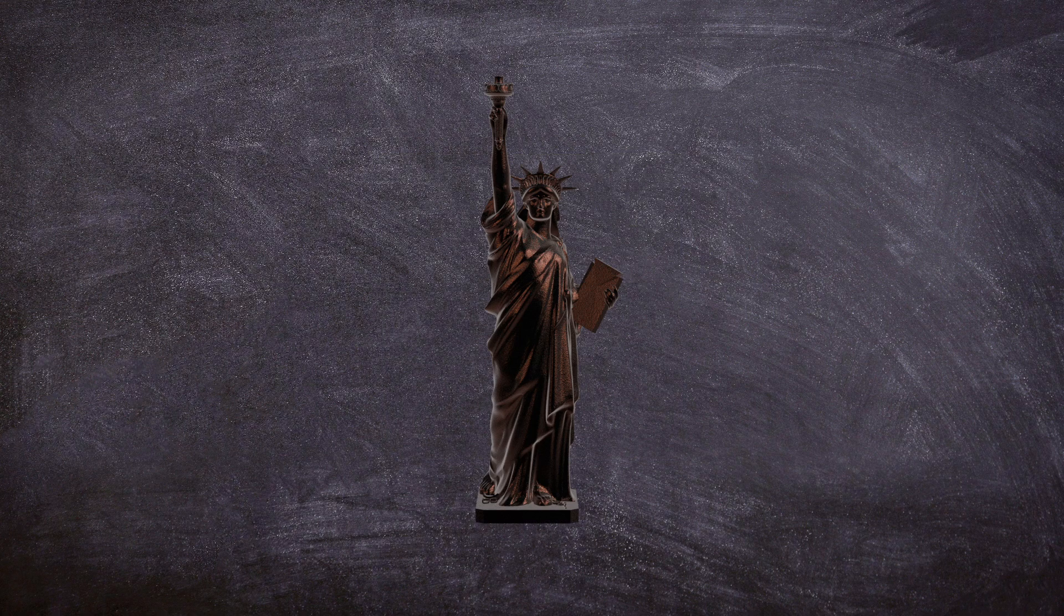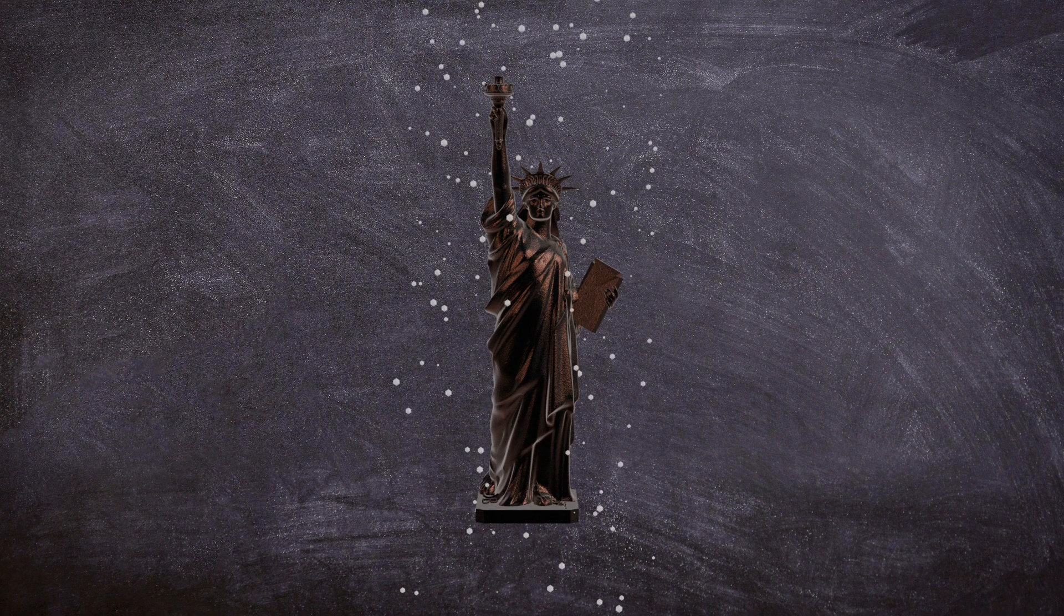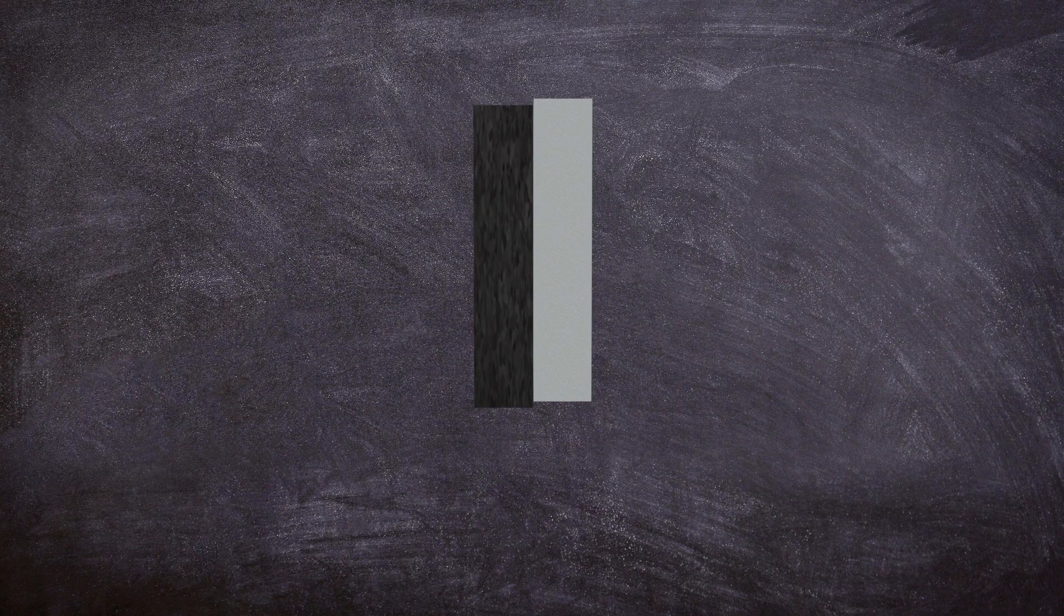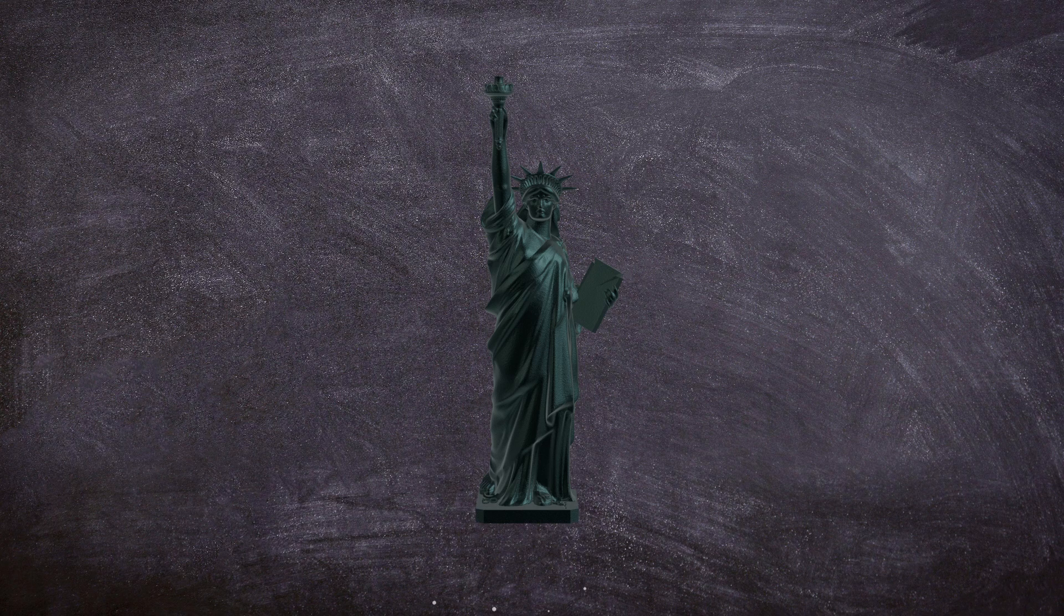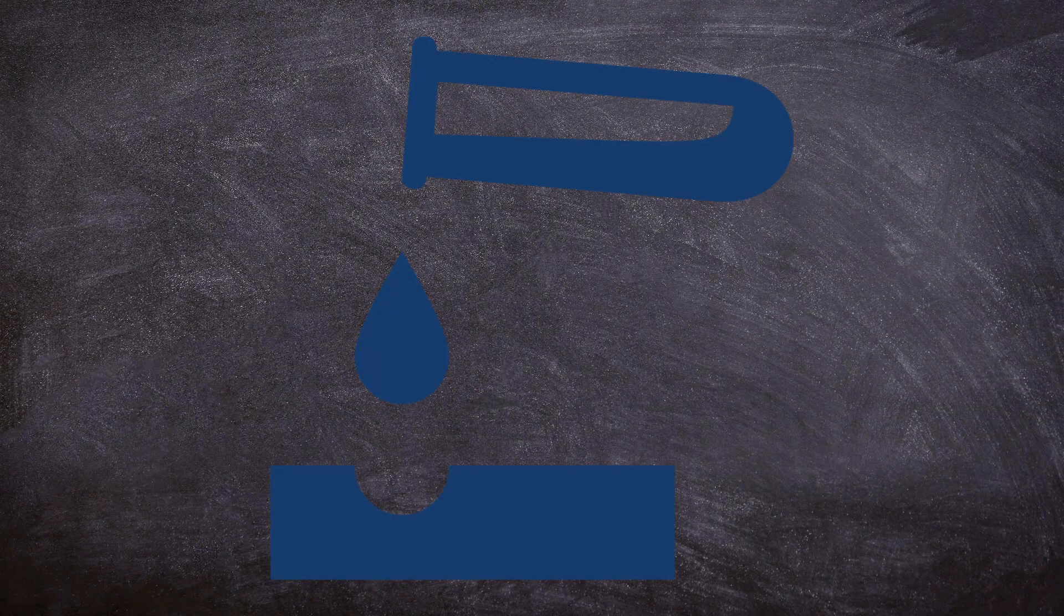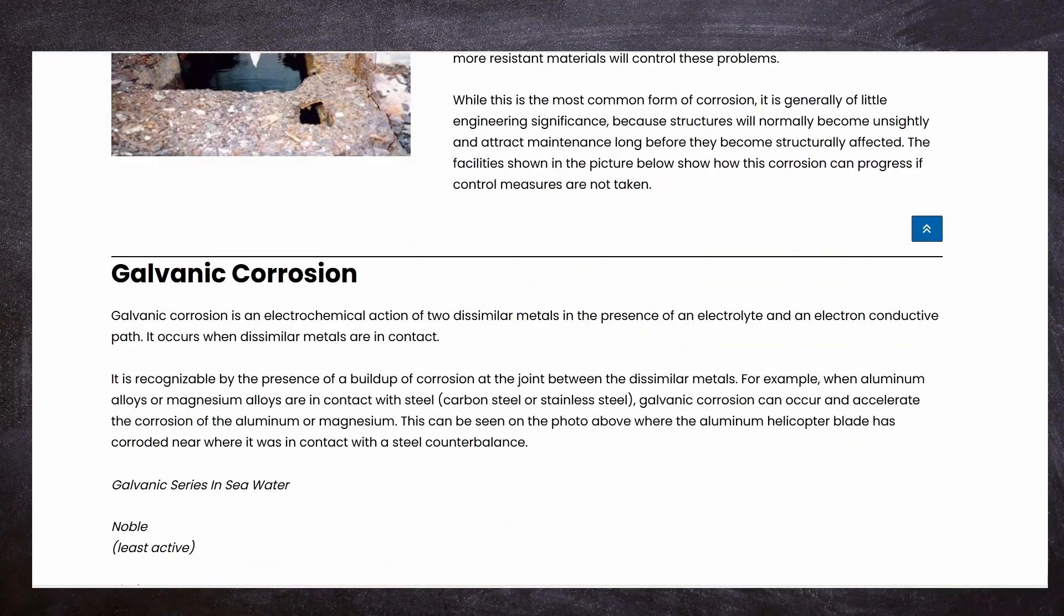Corrosion failure in physics and engineering refers to the gradual deterioration of materials, typically metals, due to chemical reactions with their environment, leading to the formation of unwanted compounds, such as rust or oxides. Unlike other types of failure that occur from mechanical stresses, corrosion is primarily a result of environmental factors, such as exposure to moisture, air, or chemicals.